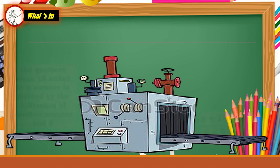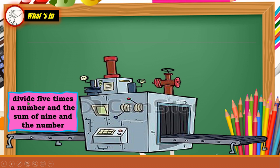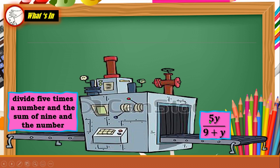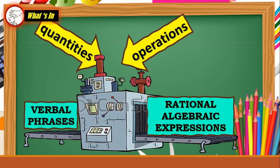Let's try another example: 'Divide 5 times a number and the sum of 9 and the number.' We only have 1 unknown quantity. We have 5 and 9 as our known quantities, and the operations are divide (division), times (multiplication), and sum (addition). Therefore, we have 5X over 9 plus X. In this activity, we have translated the verbal phrase to a rational expression, considering mathematical operations, symbols, and variables.